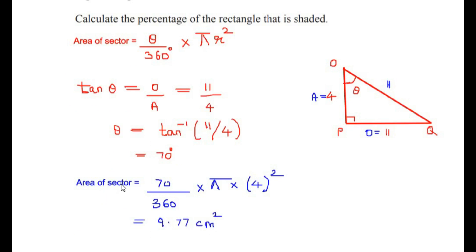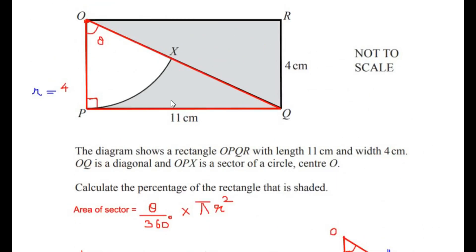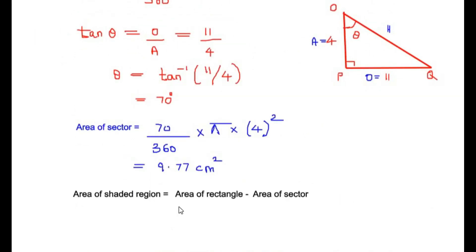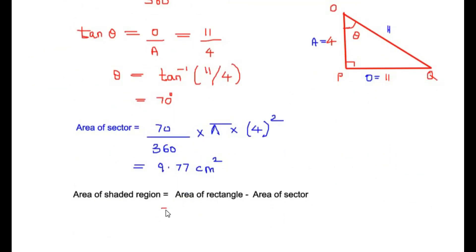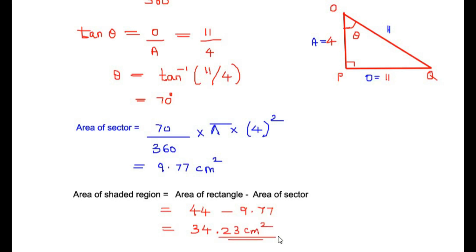We found the area of the sector, but we need to find the area of the shaded region. The area of the shaded region equals the area of the rectangle minus the area of the sector. The area of the rectangle is length × width = 11 × 4 = 44 cm². So the shaded area = 44 − 9.77 = 34.23 centimeters squared.